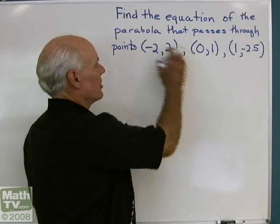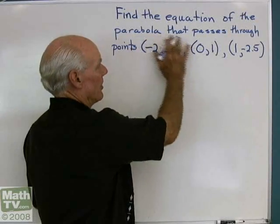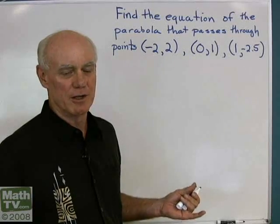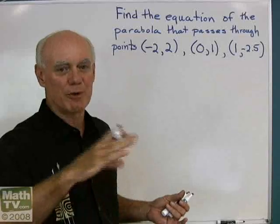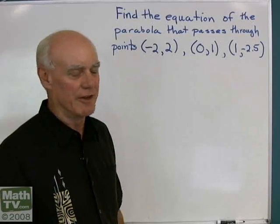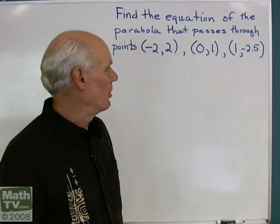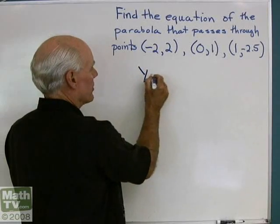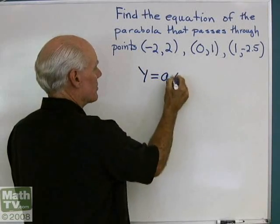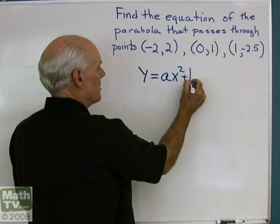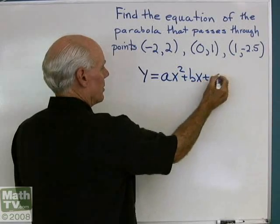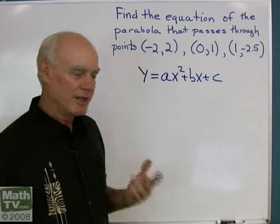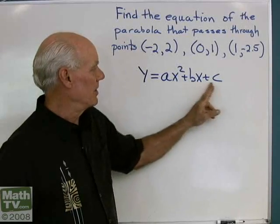We want to find the equation of the parabola that passes through these three points. These three points don't line up in a straight line, so there's one parabola that passes through all three of them. We want to find its equation. Let's say its equation is going to have this form: y equals ax squared plus bx plus c. I'll know what the parabola is if I can identify a, b, and c.